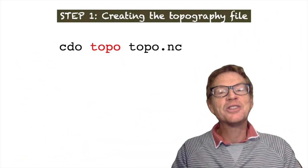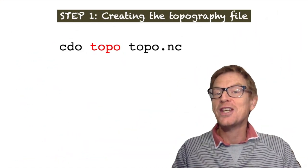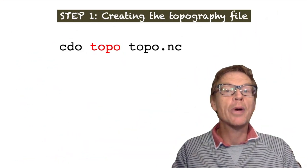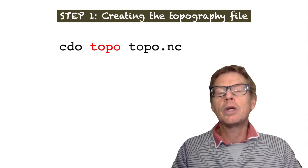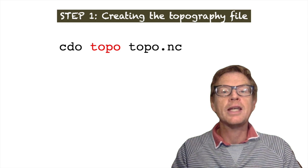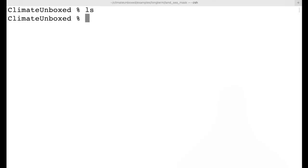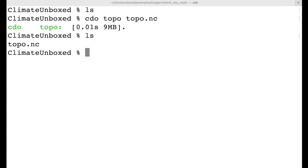So the command to perform this little piece of magic is called CDO topo. And then we need an output file name. And here we're calling it topo.nc. So here we have an empty directory. So let us now try to create a topographical file with the topo command. And this is the output file. And the command has worked. There we have topo.nc.